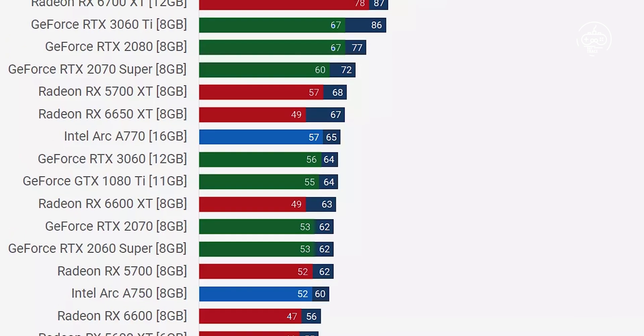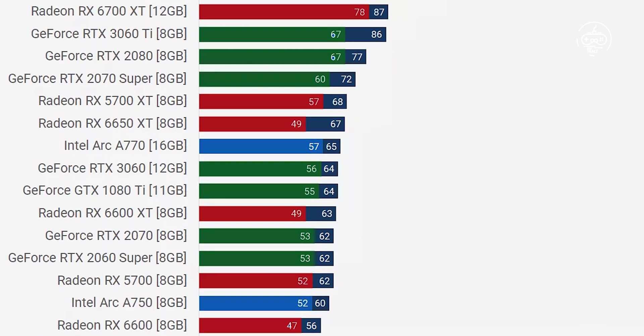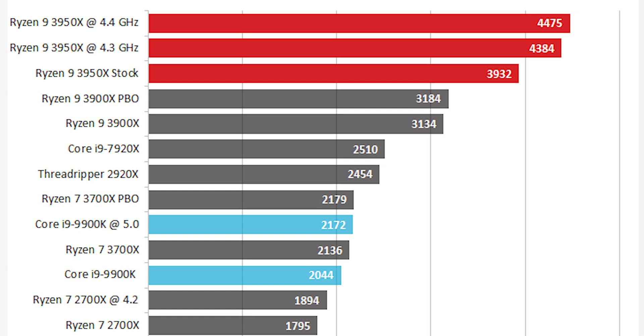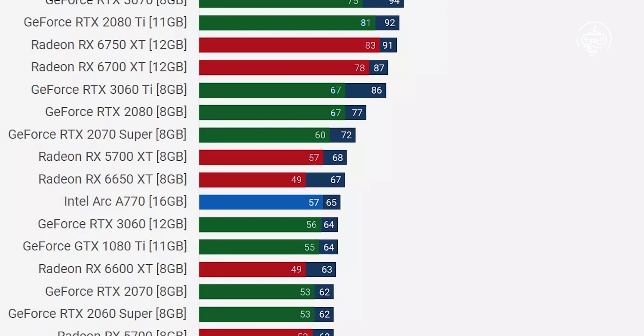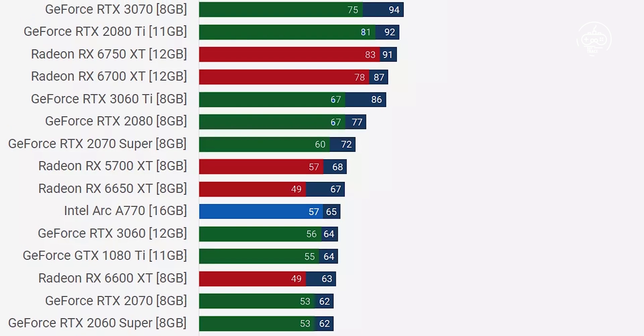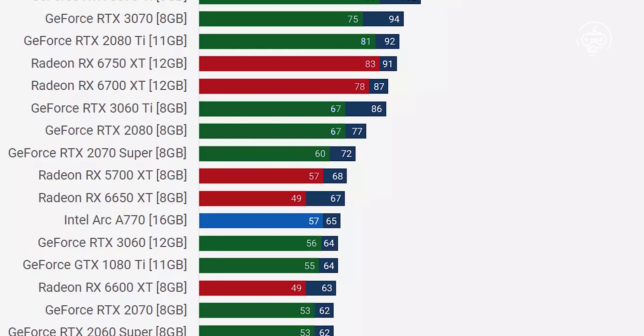So, upgrading the CPU can give you a significantly larger improvement over increasing the VRAM, especially if your scene already fits nicely into the video memory.